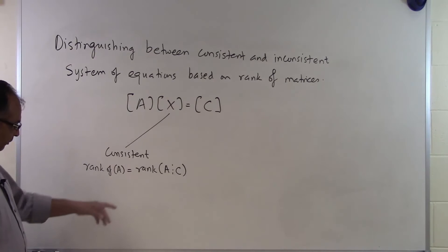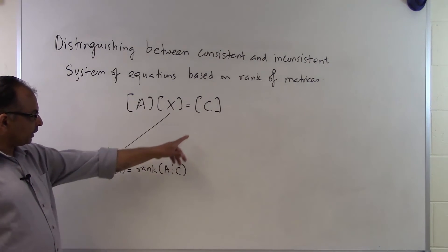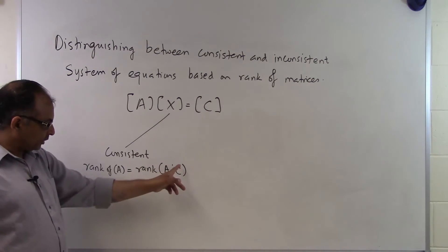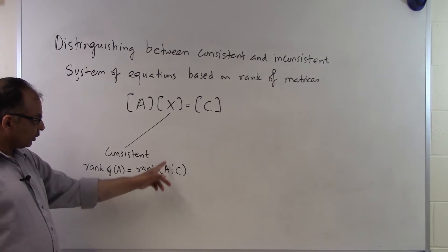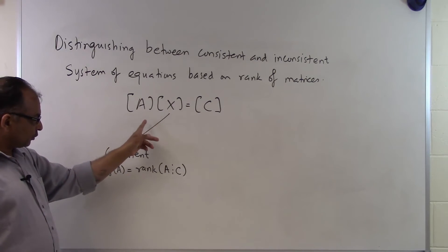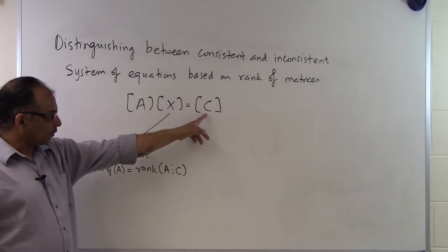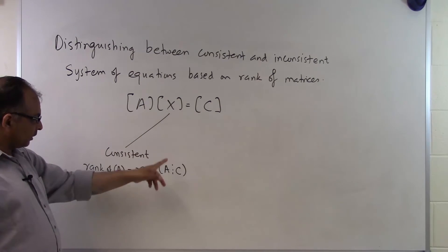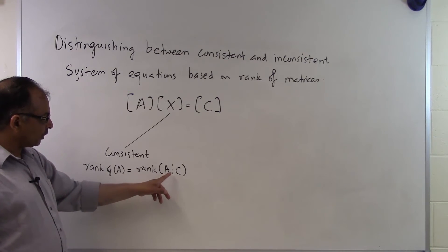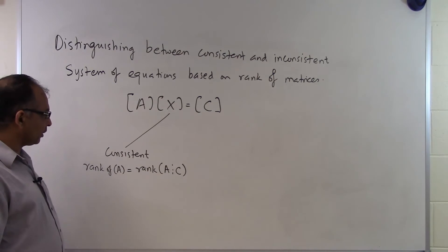What we mean by the augmented matrix is that we take the right-hand side vector and add that as a column to the A matrix. So the A matrix has, let's suppose, three rows and three columns, and this one will have one column. The augmented matrix will turn out to be four columns and three rows.